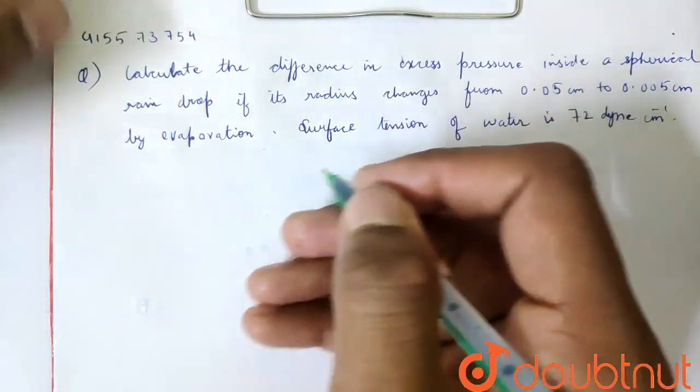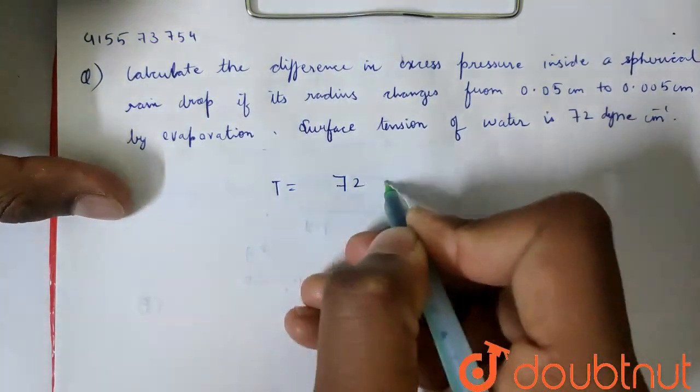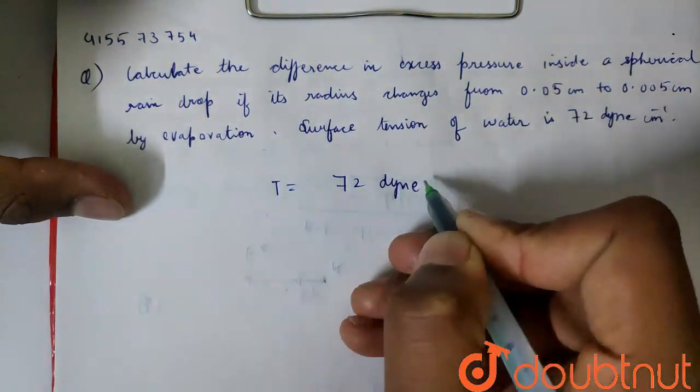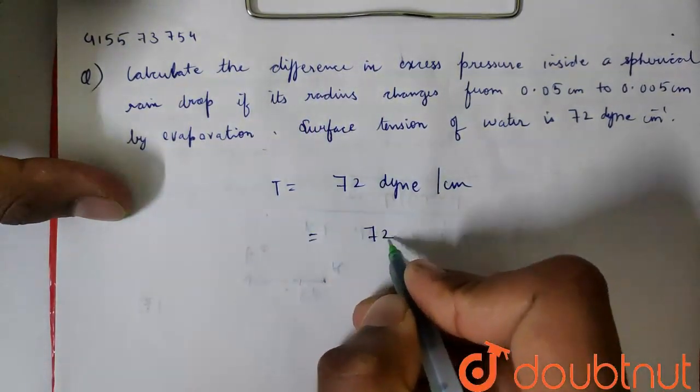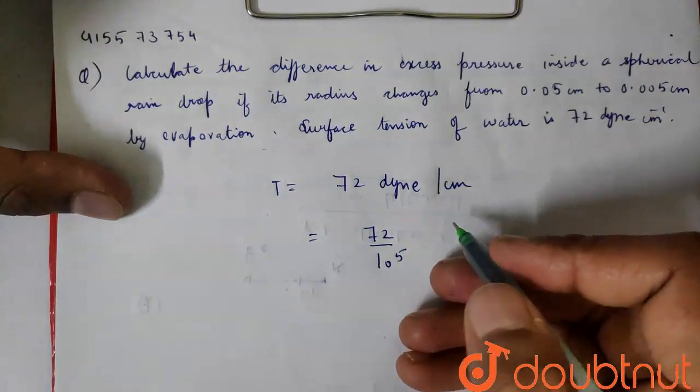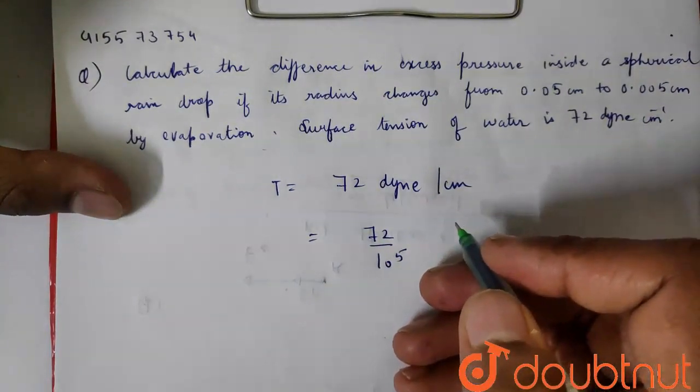First of all, let's convert surface tension. T is given as 72 dyne per centimeter. We can convert it: 72 upon 1 times 10 to the power 5. One newton is equal to 10 to the power 5 dyne.